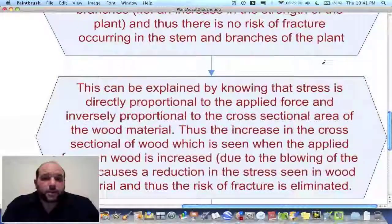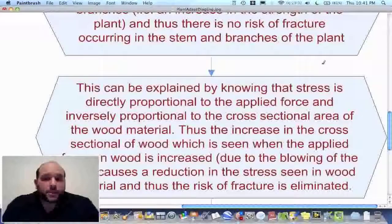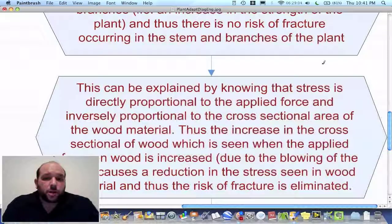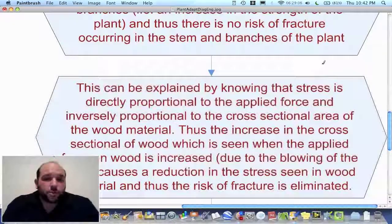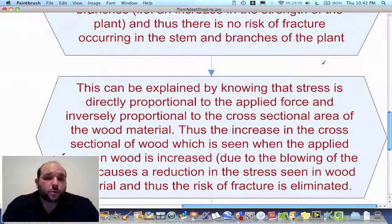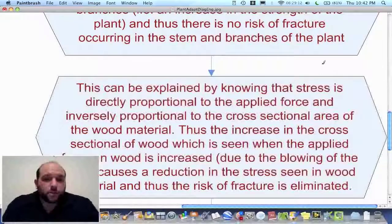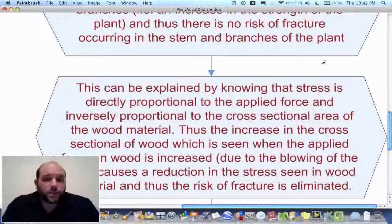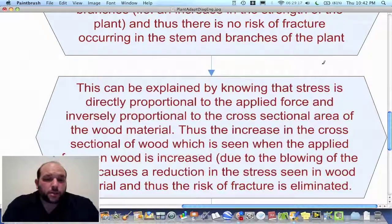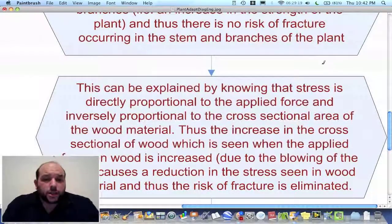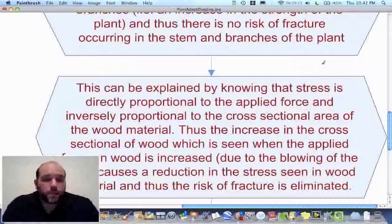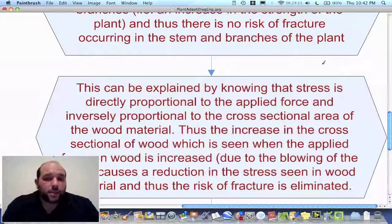This can be explained by knowing that stress is directly proportional to the applied force and inversely proportional to the cross-sectional area of the wood material. Thus, the increase in the cross-sectional area of the wood, which is seen when the applied force on wood increases due to the blowing of the wind, causes a reduction in the stress seen in wood material and thus the risk of fracture is eliminated.